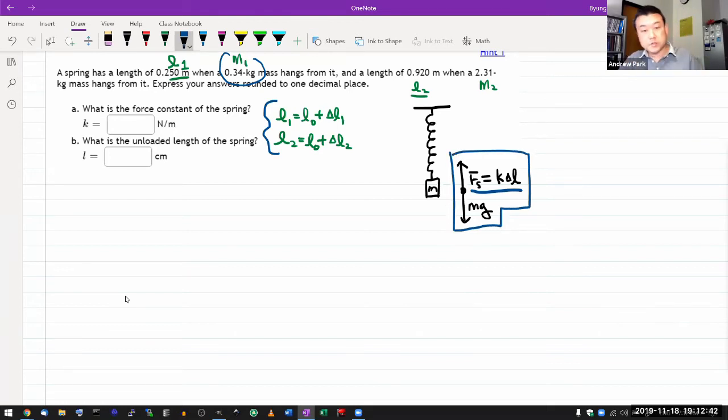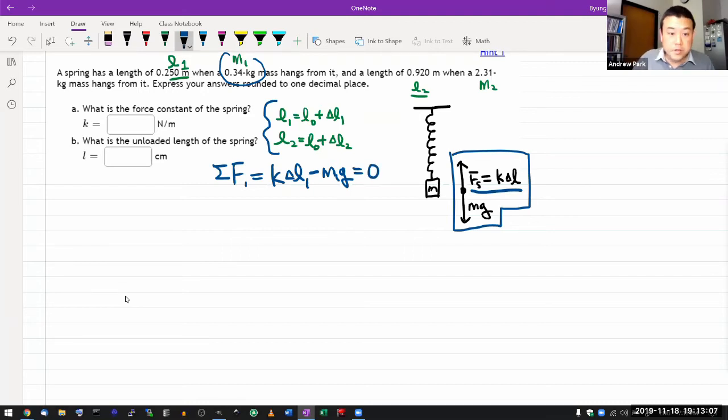I should have two equations from the two situations. The first equation is to say, net force, that would be the upward spring force, K delta L1, minus the downward force, which is M1g, equals zero. And the second equation is the exact same equation except for the other set of numbers. K delta L2 minus M2g equals zero.